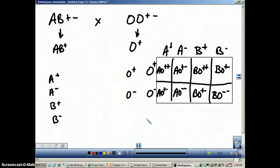So we'll do a phenotype ratio here. A positive—we don't have any AB positives. We will have some A negatives, some B positives, and some B negatives. Alright, so how many of them are A positive? One, two, three.